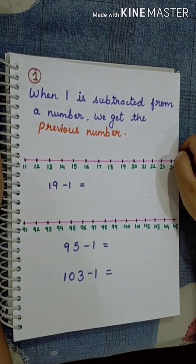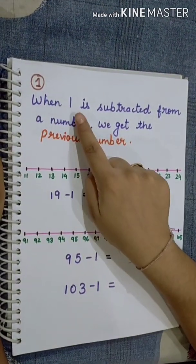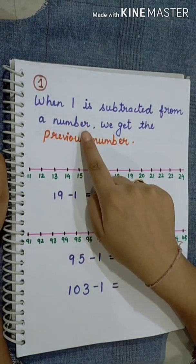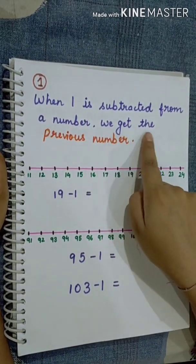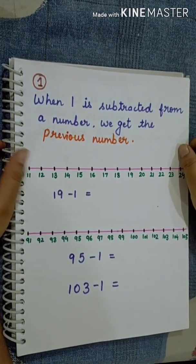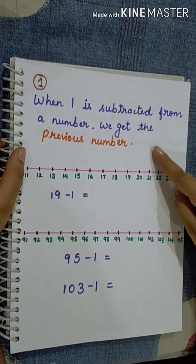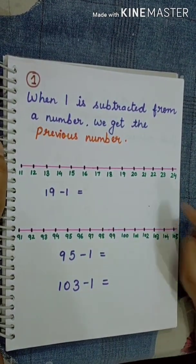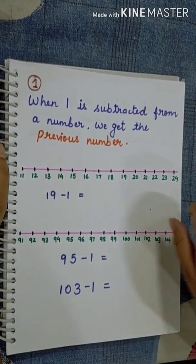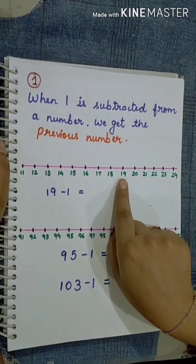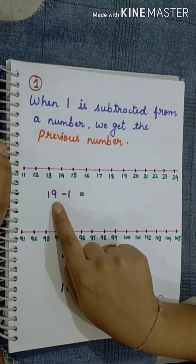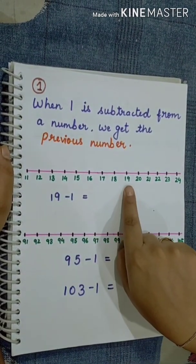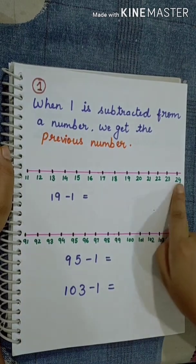The first property is: when 1 is subtracted from a number, we get the previous number. To make you understand this property, I have used a number line. So let's take a number — I have taken number 19. So where is number 19 on the number line?